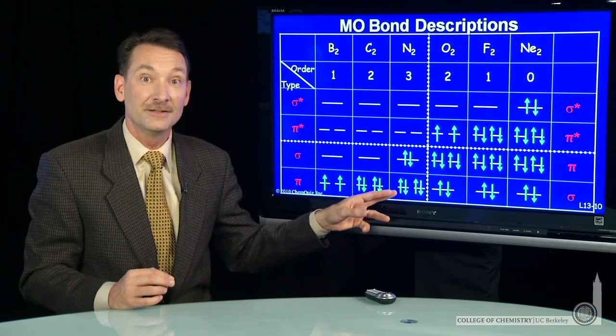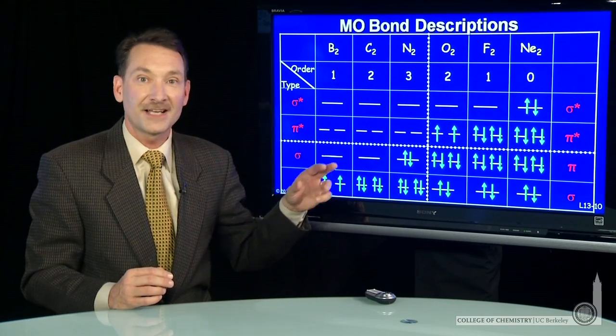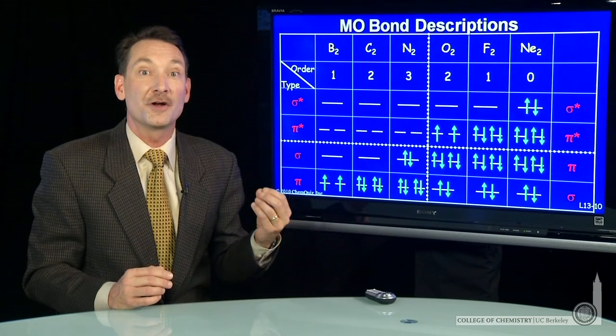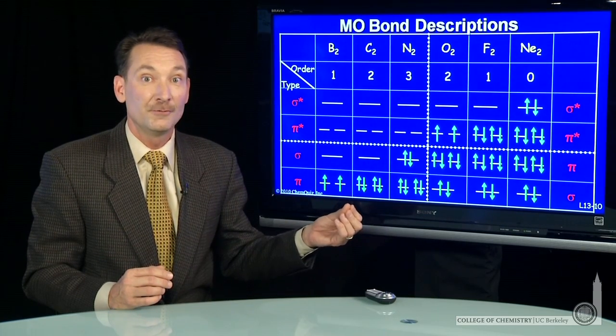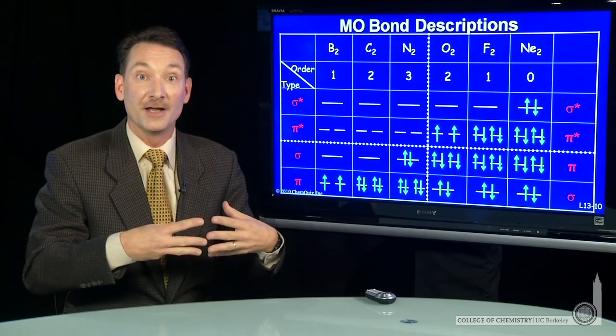Continuing to nitrogen, I get nitrogen with a triple bond. 2, 4, 6 electrons all in bonding orbitals gives me a bond order of 3 for nitrogen, which, as you know, corresponds to the Lewis electron dot structure for nitrogen, a triple bond.